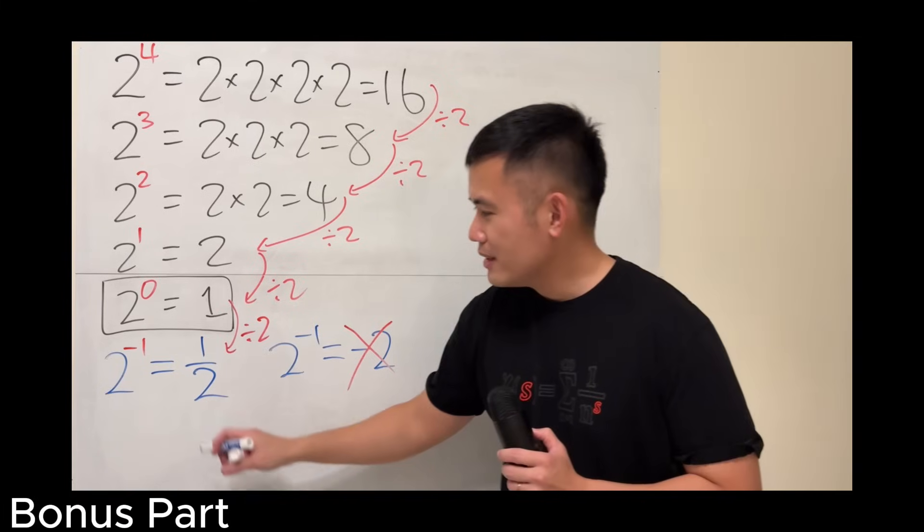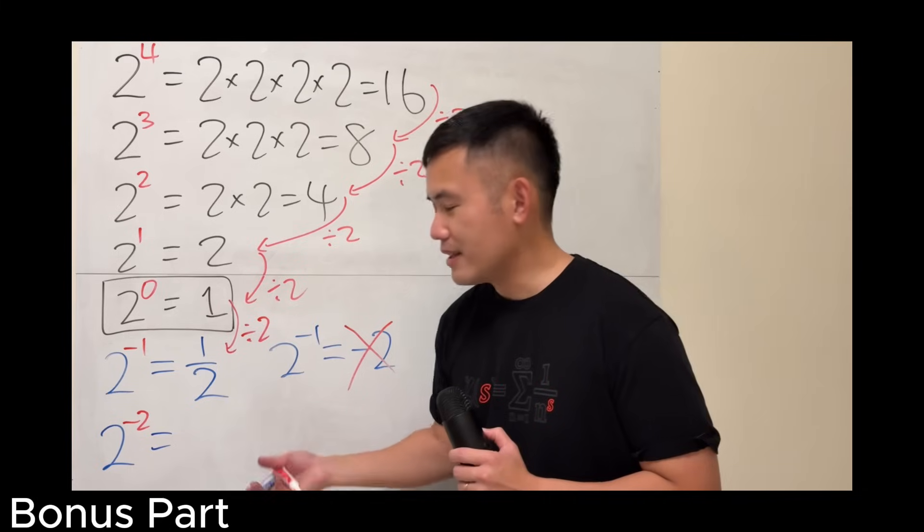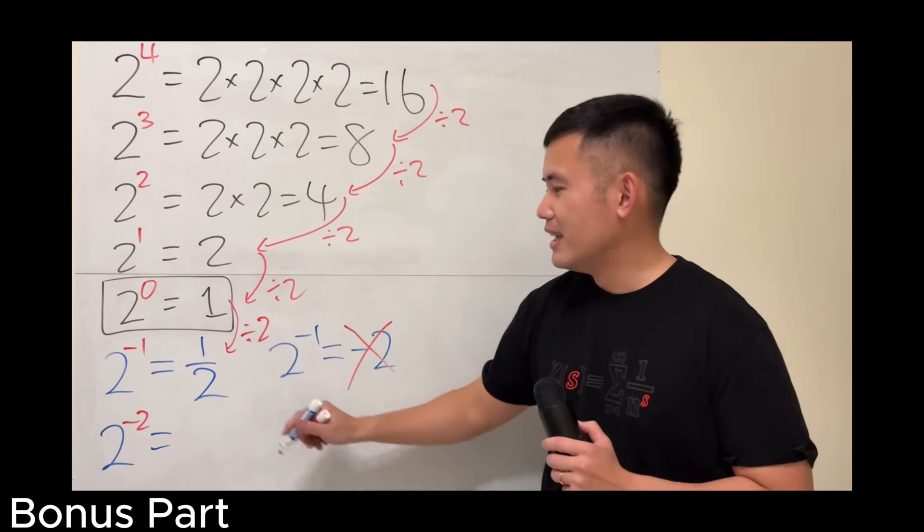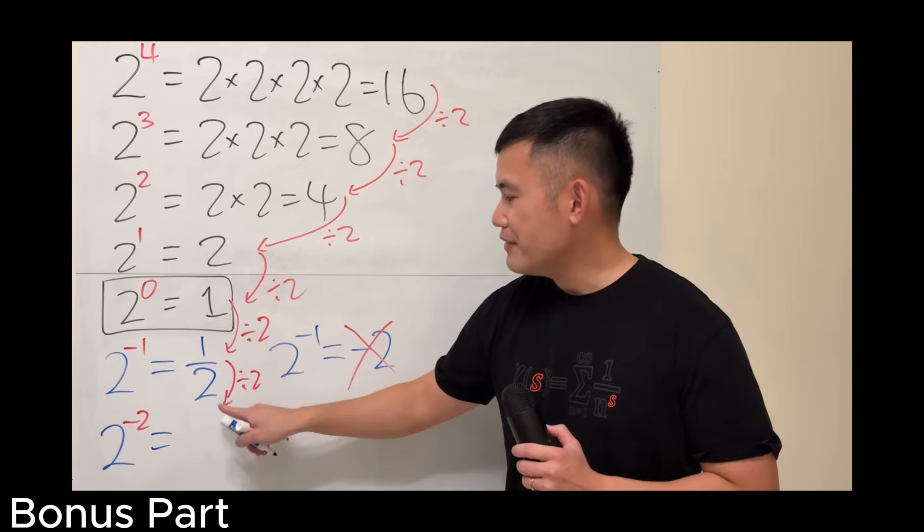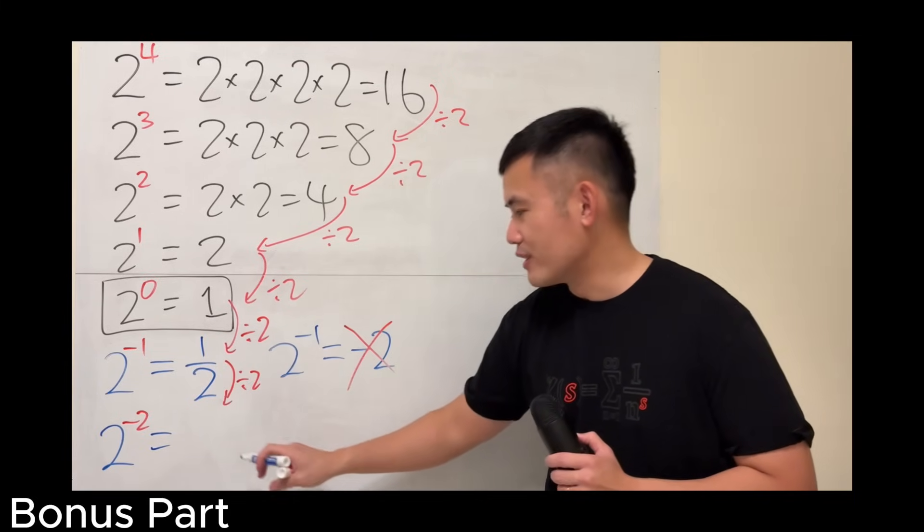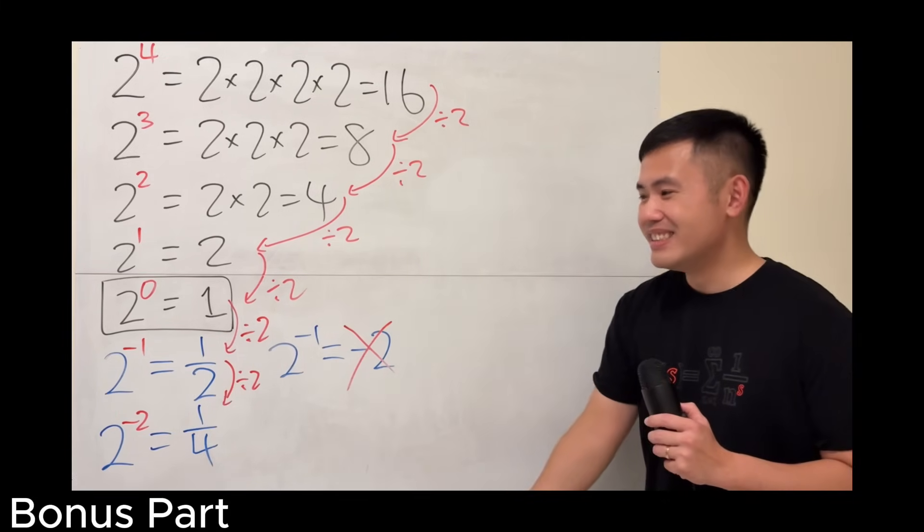And if you want to keep going, the next number will be negative 2. Does this work? Yes. Again, you'll divide this by 2. 1 half divided by 2, we get a quarter. And a quarter is the same as 1 over 4. Just like that. Very cool, huh?